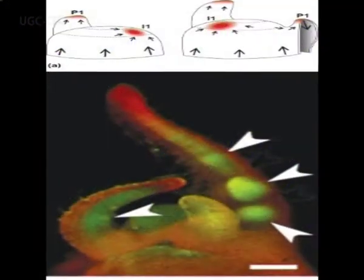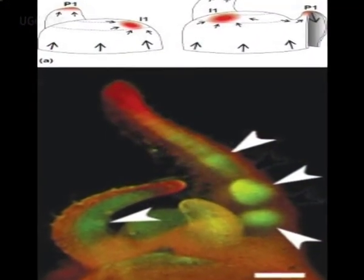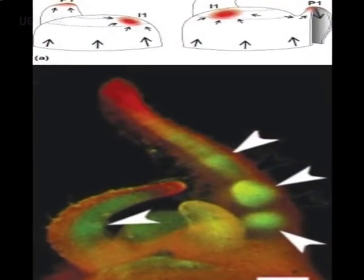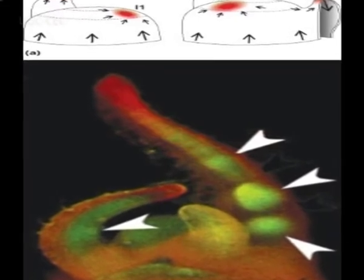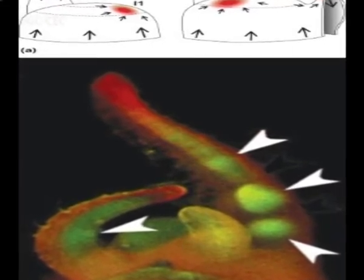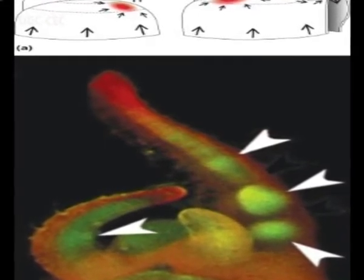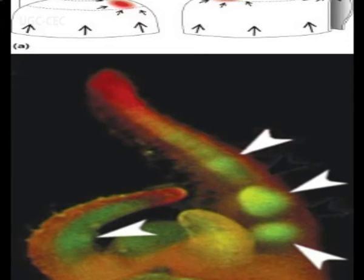Gene activity is not known to be directional. Thus, the differences between cells that are polarized along different axes must be due to subcellular specialization and not only to the activity of the genetic system.